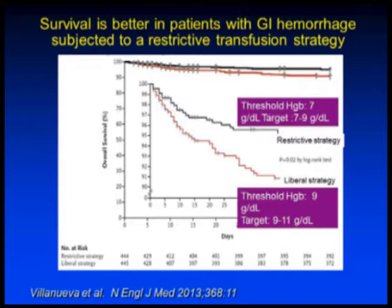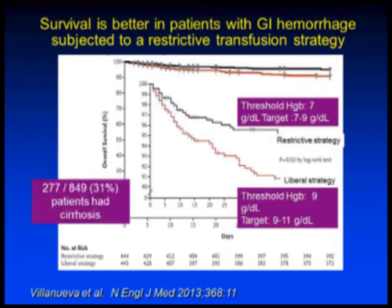The restrictive transfusion strategy was associated with significantly lower mortality compared to the liberal strategy. The author, who is actually a hepatologist, powered this to look at patients with cirrhosis specifically. One-third of the 849 patients included in this study had cirrhosis, and the results on the patients with cirrhosis were quite telling.